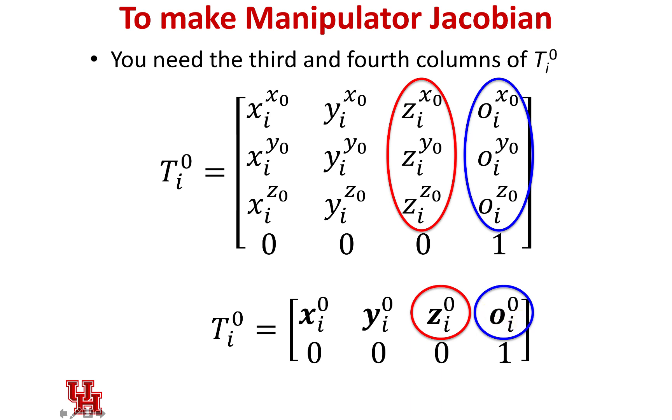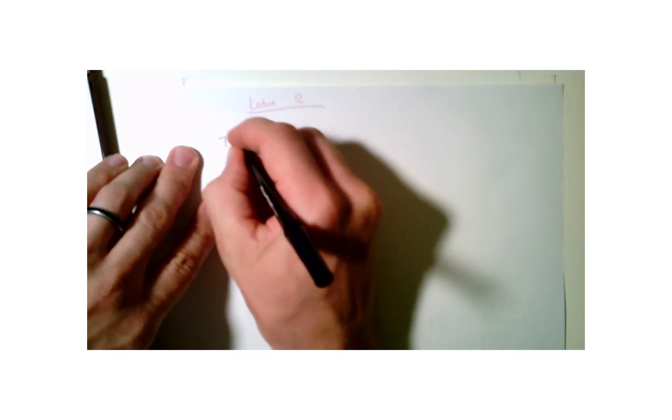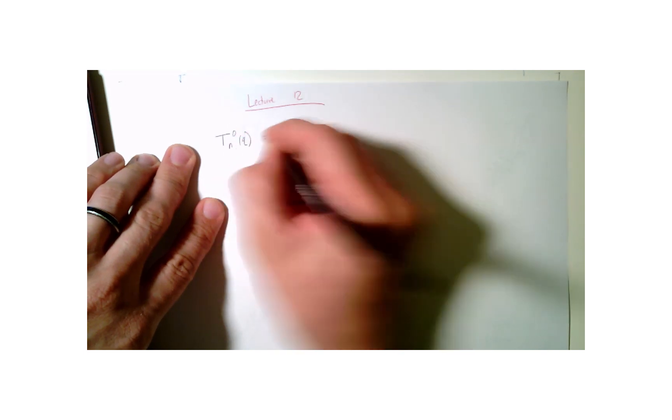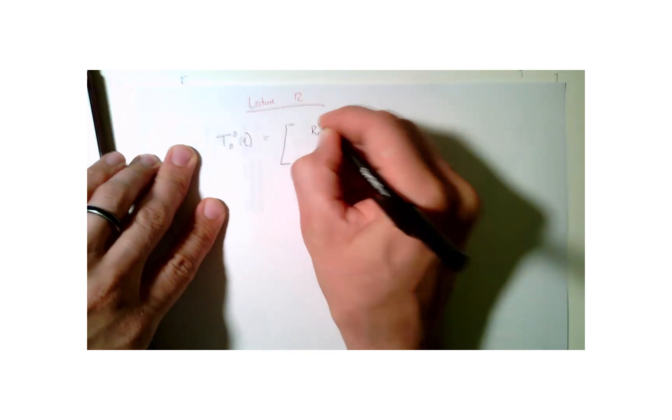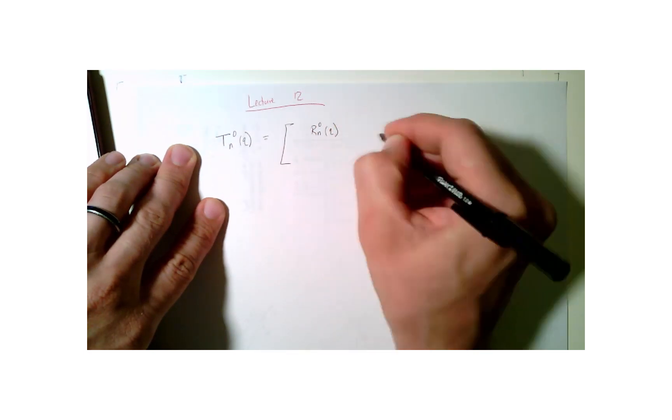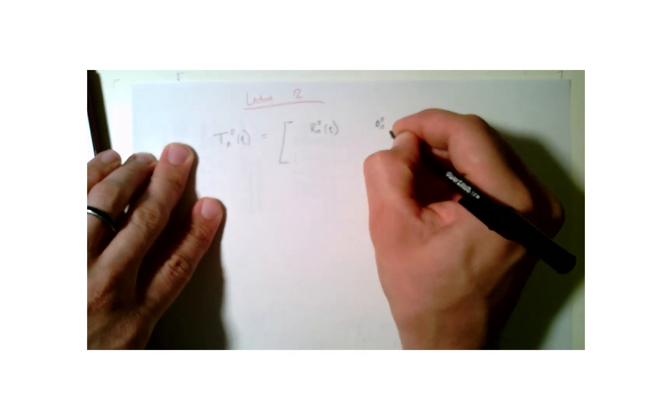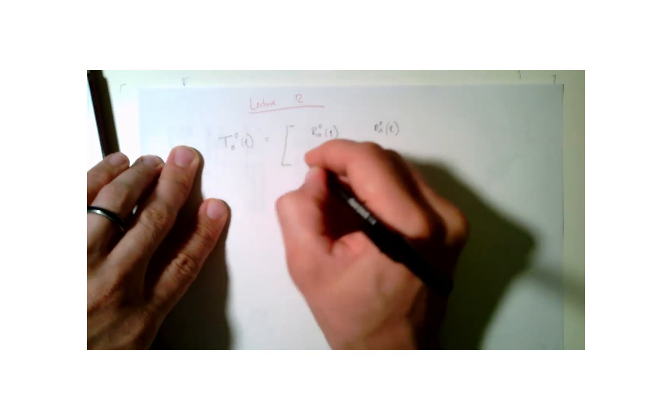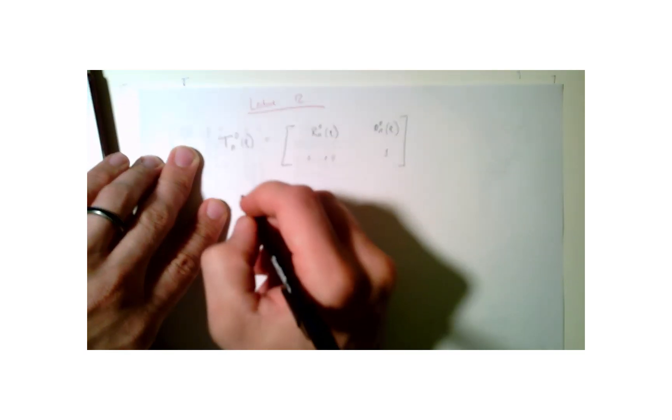Now is a good time to remind ourselves of what is this T matrix. So T n of q, well remember, that is equal to a rotation matrix. What is n in frame 0? It's a function of q. It's also the coordinates of that origin, o n in frame 0, function of q, then 1, and then 0, 0, 0.